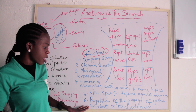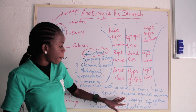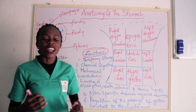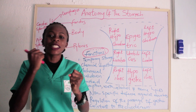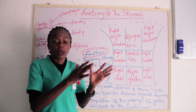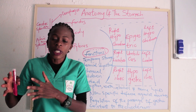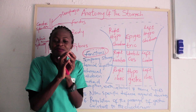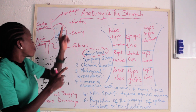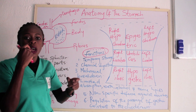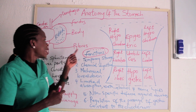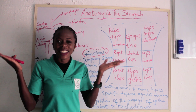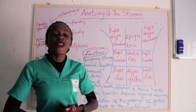The last function is regulation of the passage of gastric content. When the food is churned, peristalsis takes place and it moves to the duodenum. What moves to the duodenum is known as chyme. The food coming from the esophagus is known as bolus, but what leaves the stomach into the duodenum is known as chyme.